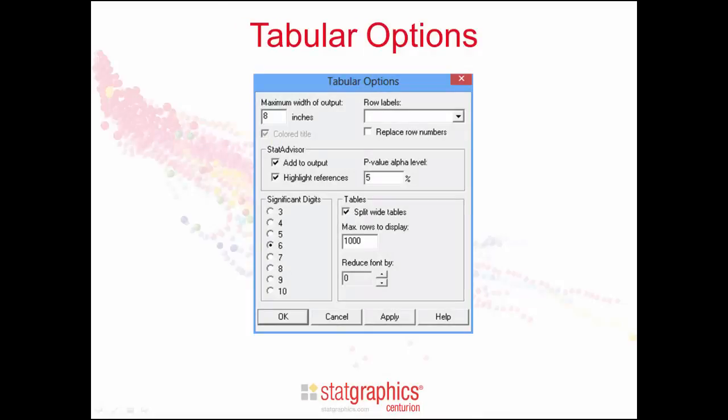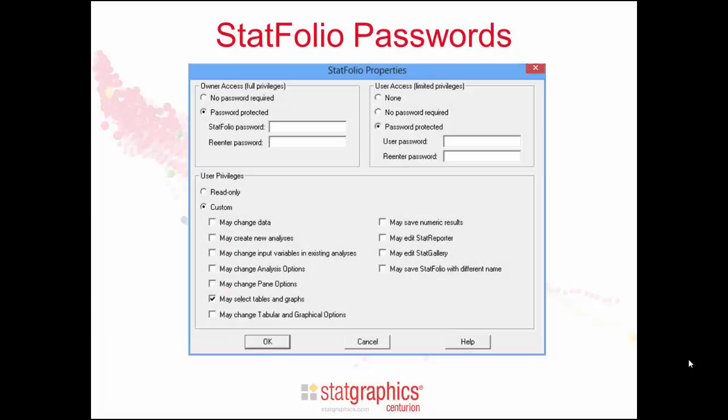The tabular options dialog box lets you make changes to a single text pane. You can change the width of the output, you can change the p-value used by the stat advisor to interpret the output, you can also change the number of significant digits used by the table to display statistical output. If the table has row numbers, such as a table of residuals, you can use a label rather than the row number to identify the rows.